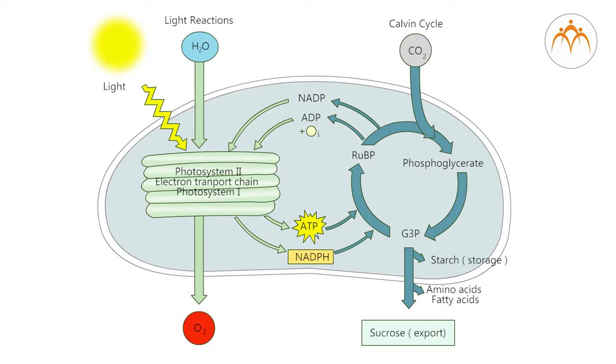Chloroplasts contain chlorophyll and use light energy to convert CO2 and water to carbohydrates and O2. Thus, they are the site of photosynthesis.